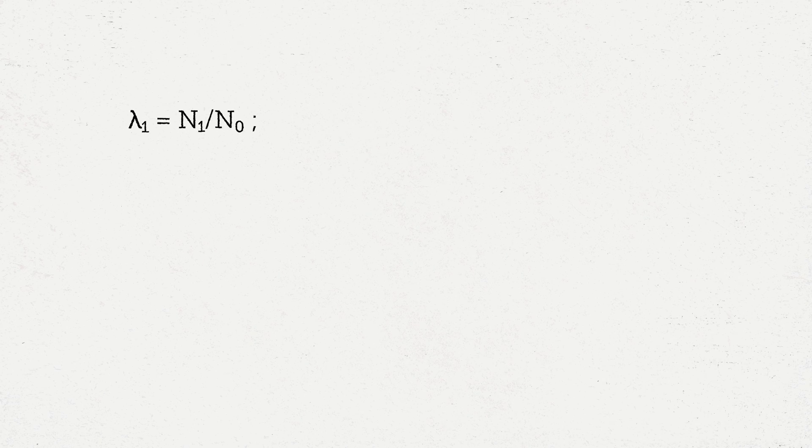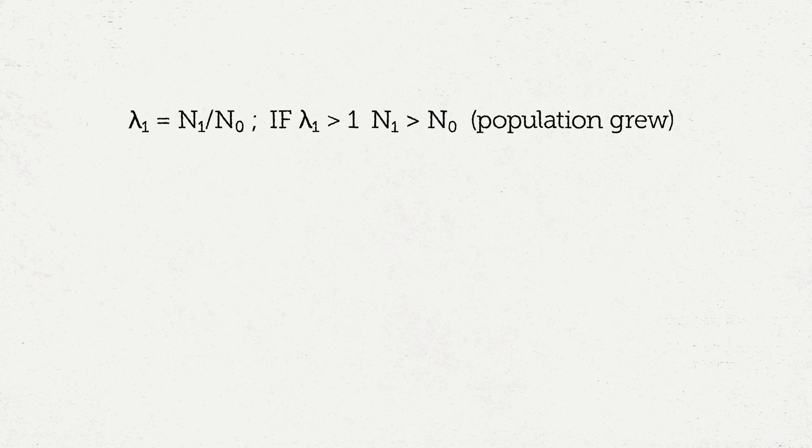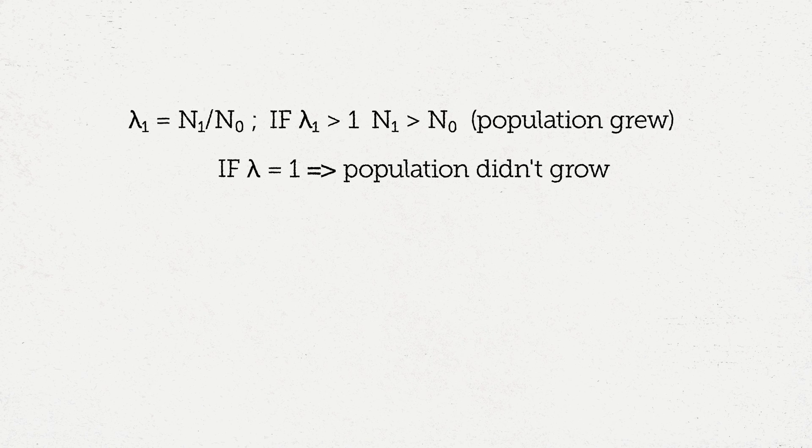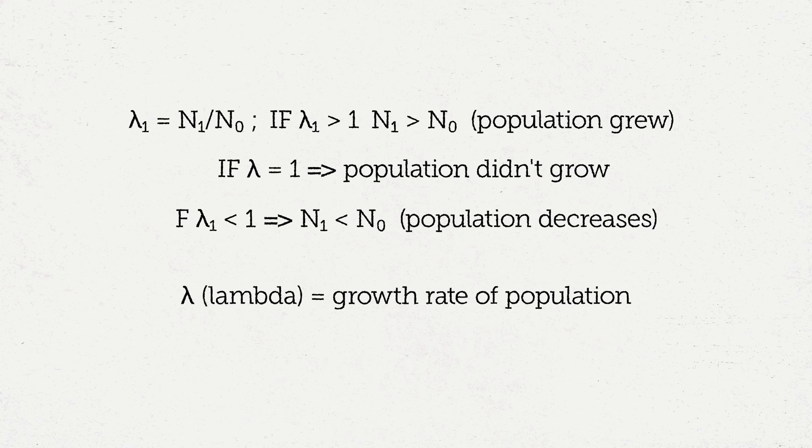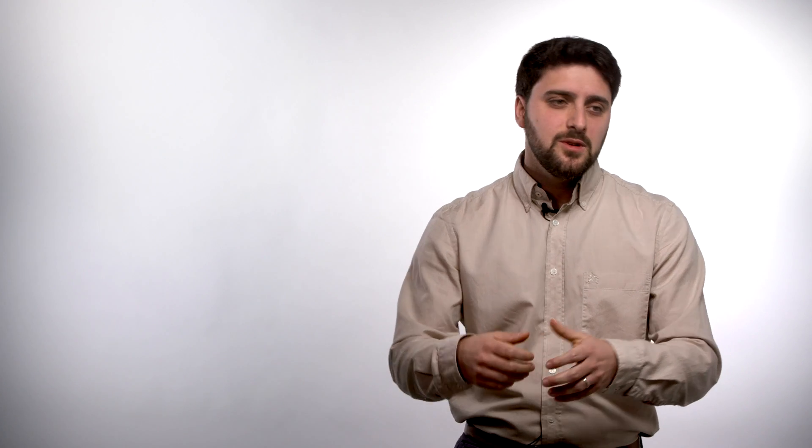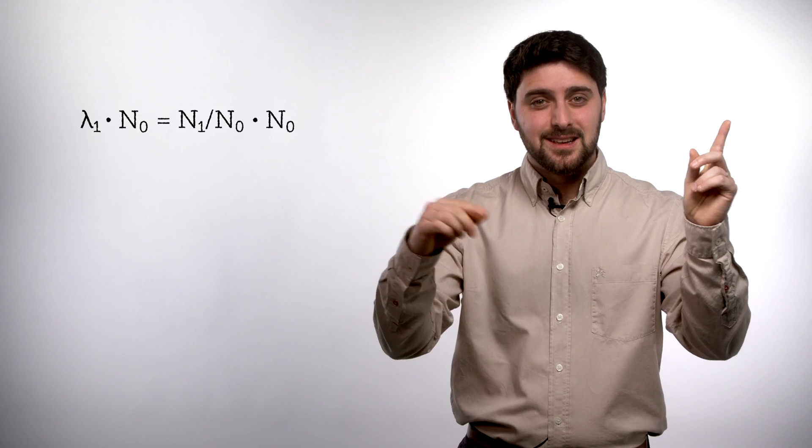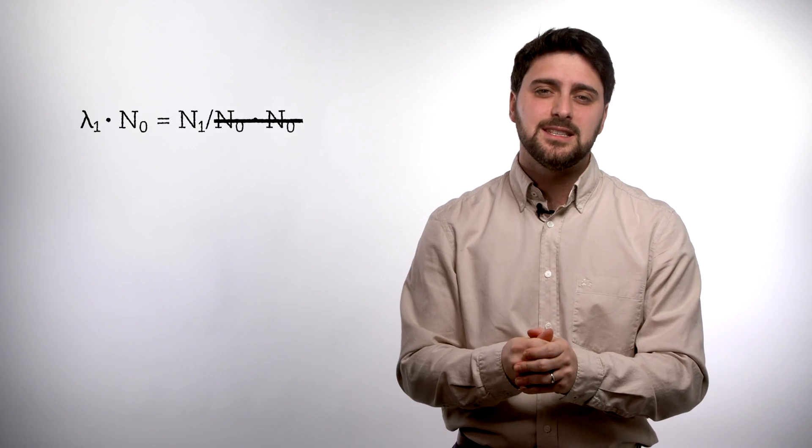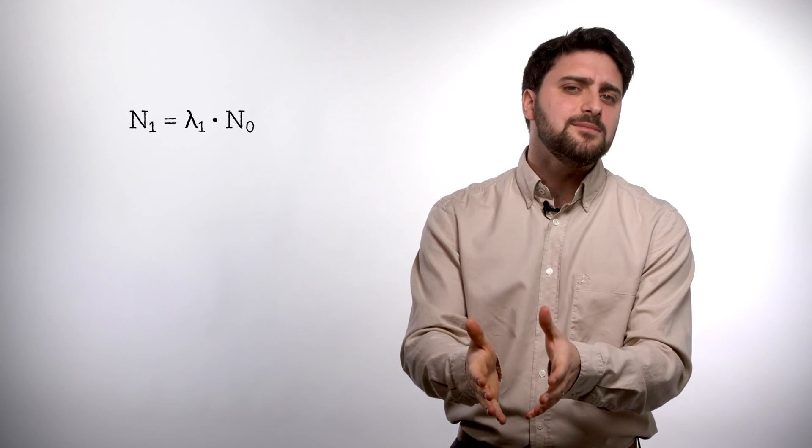So lambda 1 equals N1 over N0. If that number is above 1, it's larger than 1, that means that N1 is larger than N0. If the number is equal to 1, it means the population didn't grow. If the number is smaller than 1, it actually means that the population decreased from T0 to T1. So if we do a bit of algebra, we multiply both sides by N0 and we cancel N0s out, then we end up with this simple equation which is N1 equals lambda 1 times N0.